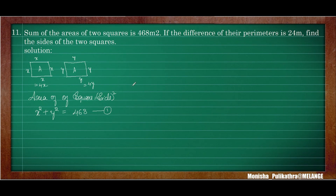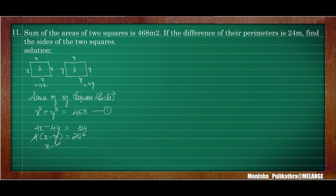The difference of the perimeters of the two squares is 24. Perimeter of square one is 4x and perimeter of square two is 4y. So 4x minus 4y equals 24. Taking 4 as common: x minus y equals 6, so x equals y plus 6. Let this be equation 2.